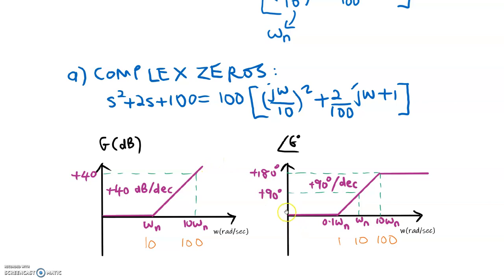For phase, the starting point is 0 degrees. We determine the frequency range based on the cutoff frequency of 10. We extend one decade before the cutoff frequency — so we get 1 — and one decade after the cutoff frequency — so we get 100. Within this frequency range only, the slope has a non-zero slope: positive 90 degrees per decade. Positive because it is a zeros function, and 90 degrees per decade instead of 45 because we have double zeros — in this case, 2 zeros.